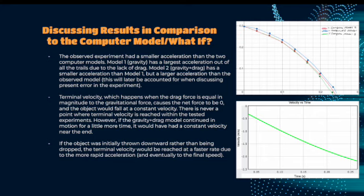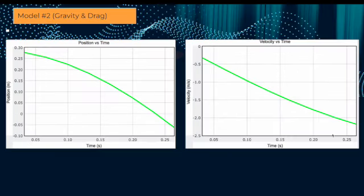The terminal velocity, which happens when the drag force is equal in magnitude to the gravitational force, causes the net force to be zero and the object would follow the constant velocity at this point. There is never a point where terminal velocity is reached within the test experiments. However, if the gravity and drag model continued in motion for a little more time, it would have had a constant velocity near the end, as you can see here, because it's starting to sort of even out and reach its final speed.